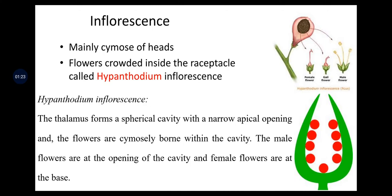Inflorescence is mainly cymose or head type. Flowers are crowded inside the receptacle in a hypanthodium inflorescence. In hypanthodium, the thalamus forms a spherical cavity with a narrow apical opening, and the flowers are cymosely borne within the cavity. Male flowers are at the opening of the cavity and female flowers are at the base.